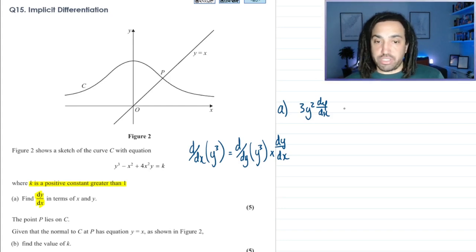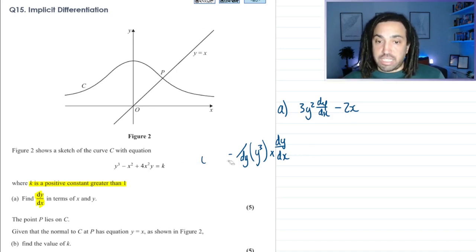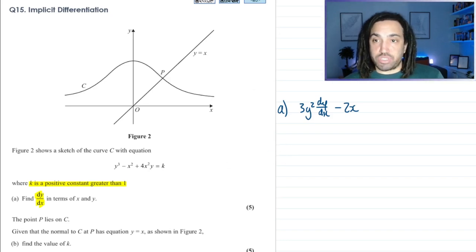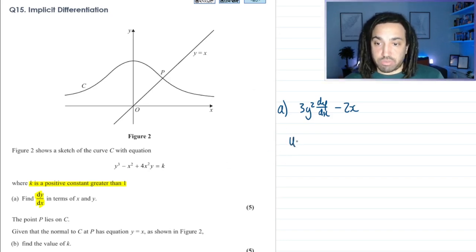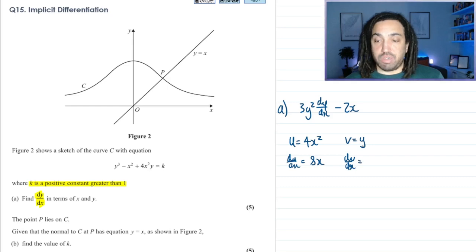Next one, minus 2x, well that is a function of x, so that just differentiates normally, and that is just minus 2. Then the next one is a product, so we can use the good old product rule. We can say u is 4x squared and we can say v is equal to y. So differentiating this one, well that's just the function of x, so that just goes to 8x. Differentiating this one gives us, well, y differentiates to 1 with respect to y, then we times it by dy/dx, so we just get 1 times dy/dx.